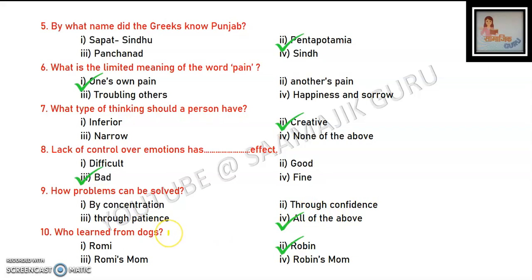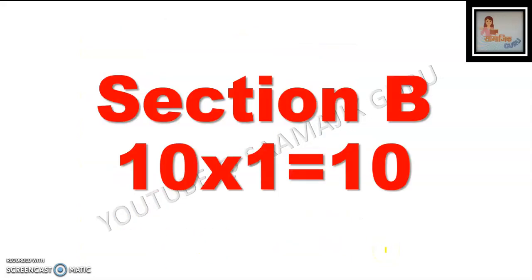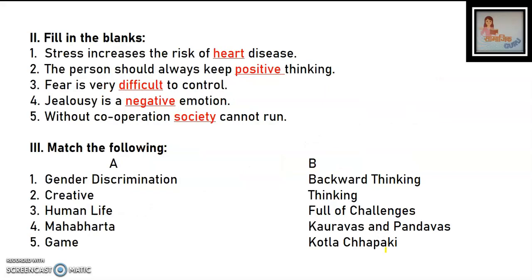Who learned from dogs? According to this question, the answer is Robin. That completes your 10 Section A questions, each worth 1 mark.